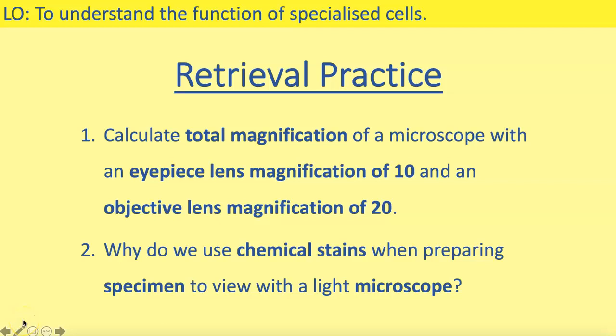Today we're going to be looking at the function of different types of specialised cells. The first thing we need to do is our retrieval practice. For this session, you are going to need something to write with — a pencil or a pen — some scissors, and a piece of paper. You might need more than one piece of paper. Make sure you've got all this before we start.